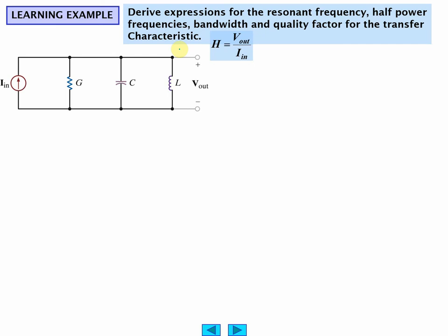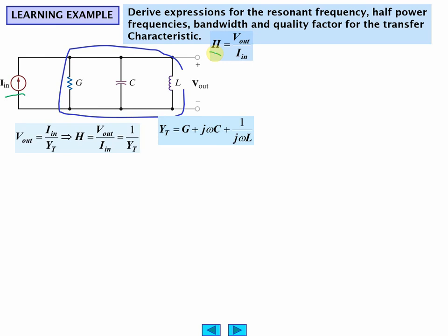Okay, so expressions for the resonance, half power frequencies, bandwidth, and quality factor for this guy. Here's the admittance. This is a definition of the gain. Notice we don't have a voltage over here, we have a current instead. H is the transfer characteristic.